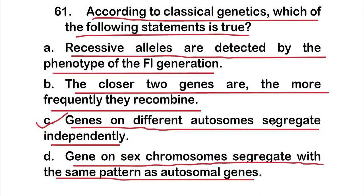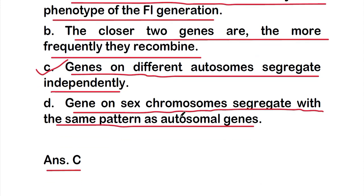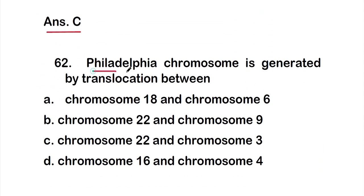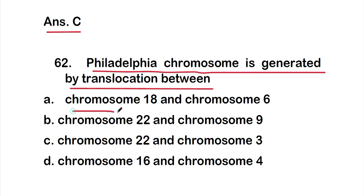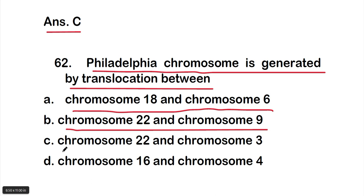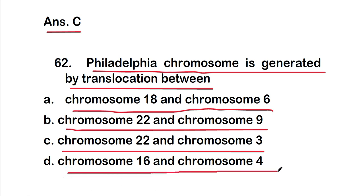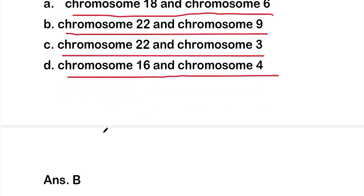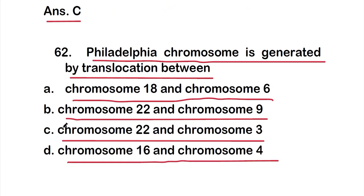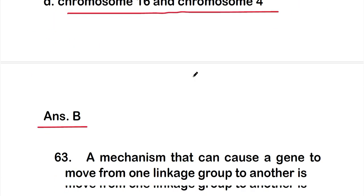Moving on to question 62: the Philadelphia chromosome is generated by translocation between which chromosomes? Option A: chromosome 18 and chromosome 6. Option B: chromosome 22 and chromosome 9. Option C: chromosome 22 and chromosome 3. Option D: chromosome 16 and chromosome 4. The right answer is Option B — chromosome 22 and chromosome 9.